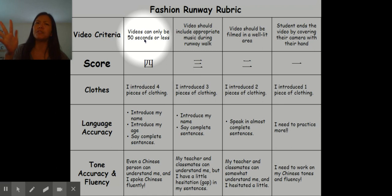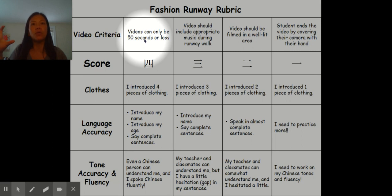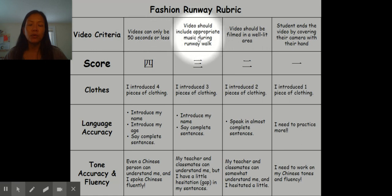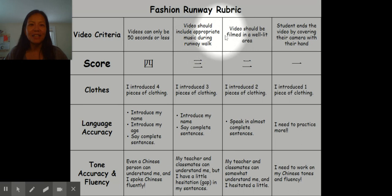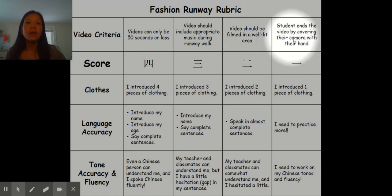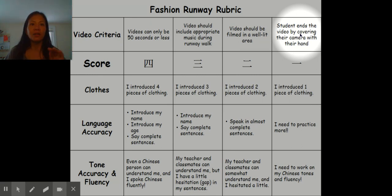Make sure your video is about 50 seconds or shorter so that when I'm putting them together, it's not going to be a whole long video for everyone to view. Try to shrink it down as close to 50 seconds as you can. Your video should include appropriate music during the runway walk — if you don't have it, it's okay, but it will make your video that much better. Your video should be filmed in a very well lit area so you can actually see what you're wearing and what you're describing. At the end of your video, you need to cover up your camera to end your video so that we can have video transitioning.